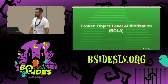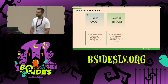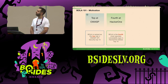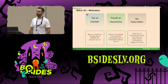BOLA, or Broken Object Level Authorization, is our motivation for this research. It is the top risk at the OWASP API Top 10 — number one — and also the fourth most reported vulnerability on HackerOne. It's very popular and very severe, and there is no automation tool that actually detects BOLA at scale today.